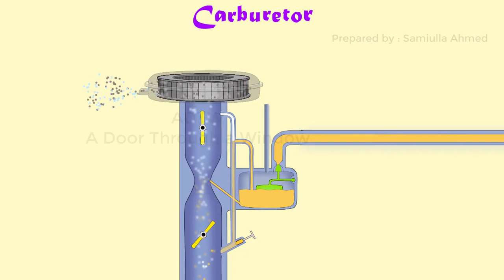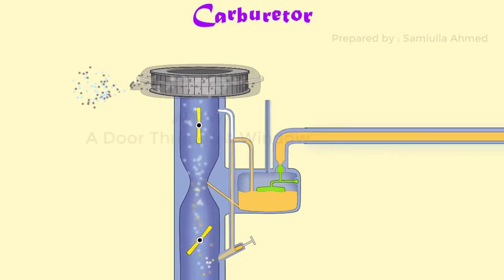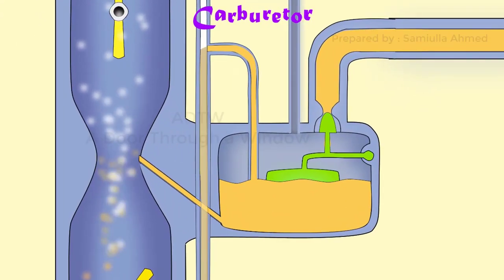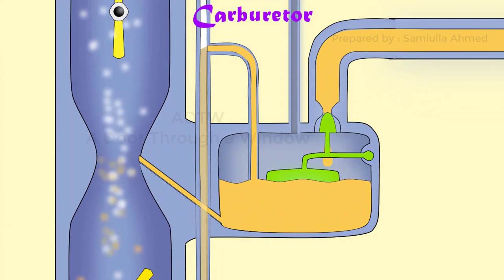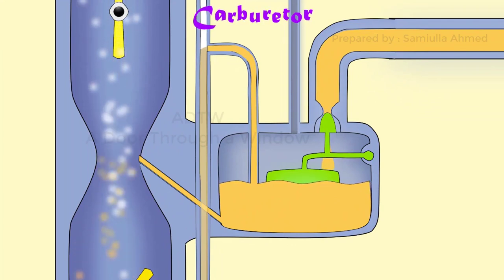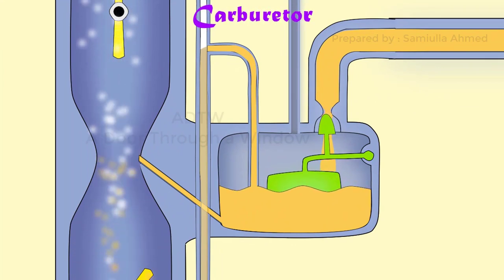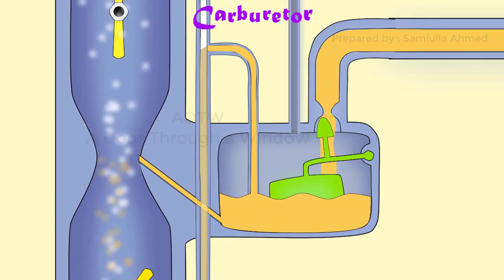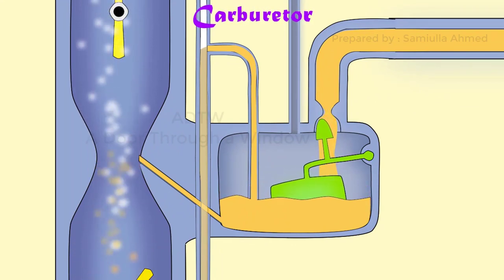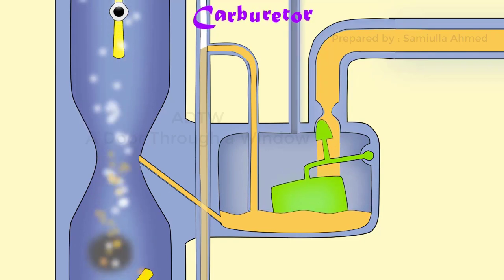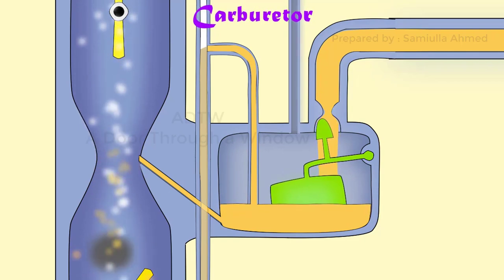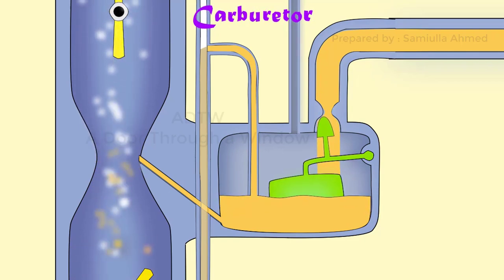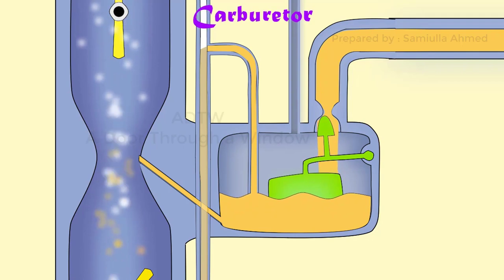The function of the float and the needle valve system is to maintain a constant level of gasoline in the float chamber. If the amount of fuel in the float chamber falls below the designed level, the float goes down thereby opening the fuel supply valve and admitting fuel.